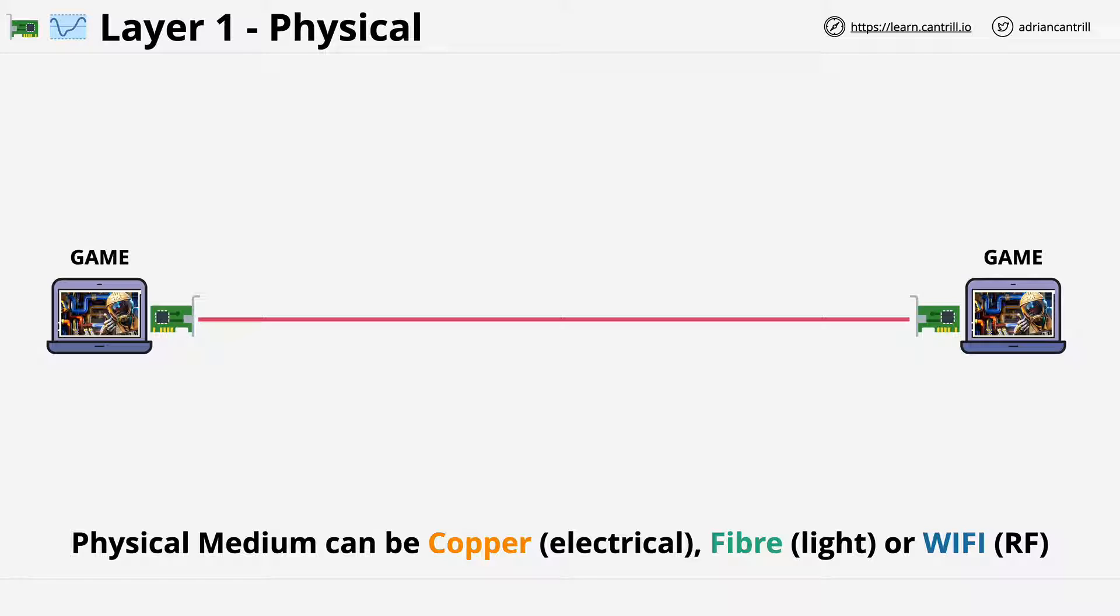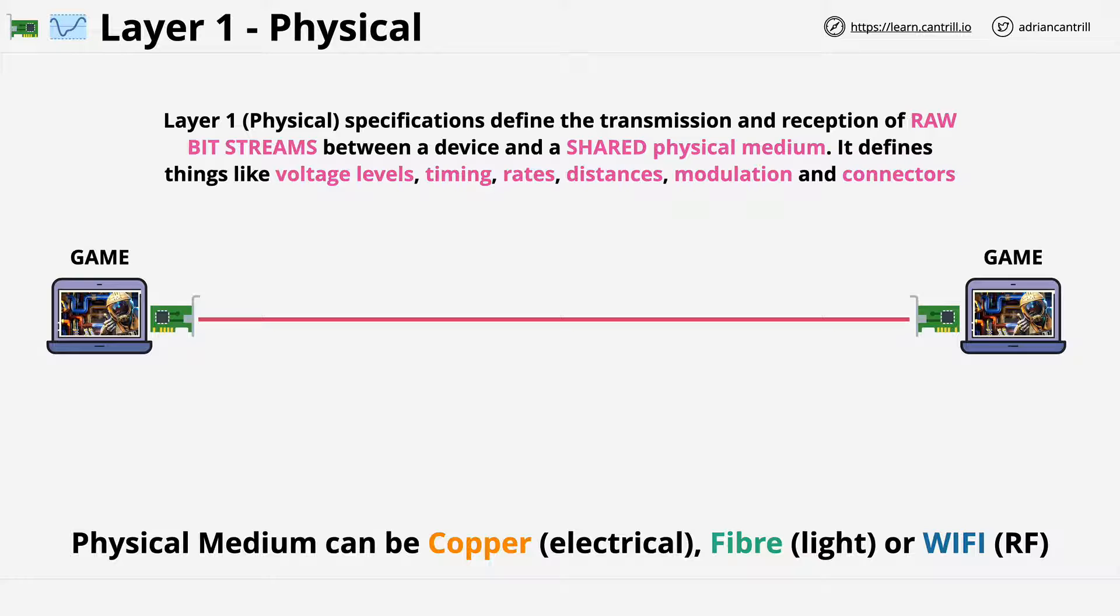Whatever type of medium is used, it needs a way of being able to carry unstructured information. And so we define layer 1, or physical layer standards, which are also known as specifications. And these define how to transmit and receive raw bit streams. So 1s and 0s between a device and a shared physical medium. In this case, the piece of copper networking cable between our two laptops. So the standard defines things like voltage levels, timings, data rates, distances which can be used, the method of modulation, and even the connector type on each end of the physical cable.